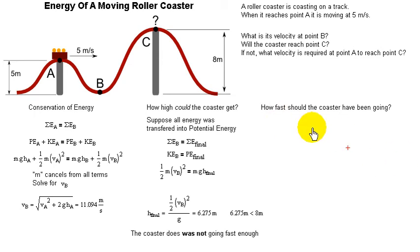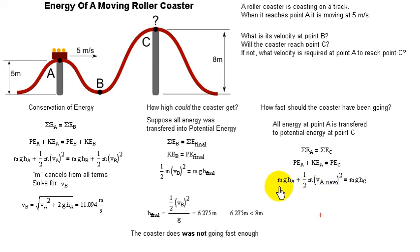How fast should the coaster have been going? All the energy at point A is transferred to potential energy at point C. All the energy at A is all the energy at C. Potential energy at A plus the kinetic energy at A is going to equal the potential energy at C. M G H A plus one half M V A new squared equals M G H C.